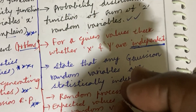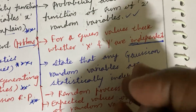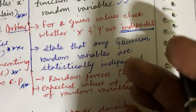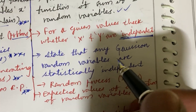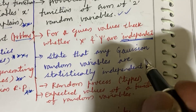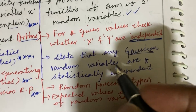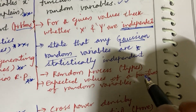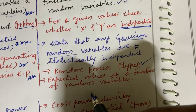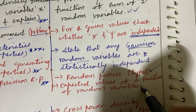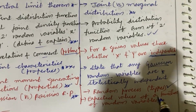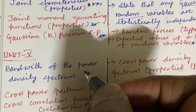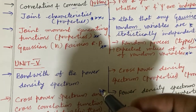For a given value, check whether X and Y are independent — such questions are damn sure in the question paper. You will be getting two short questions in the form of long questions, covering the third unit. Dear students, do not skip any part. State that any Gaussian random variables are statistically independent. Random process and its types is a short question. Expected values of a function of a random variable may also be a short question.